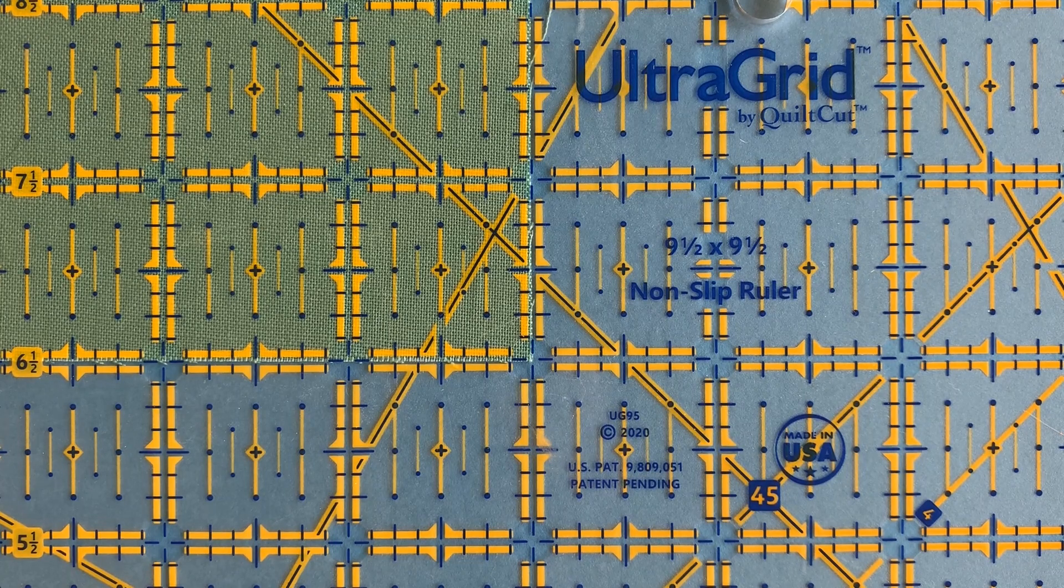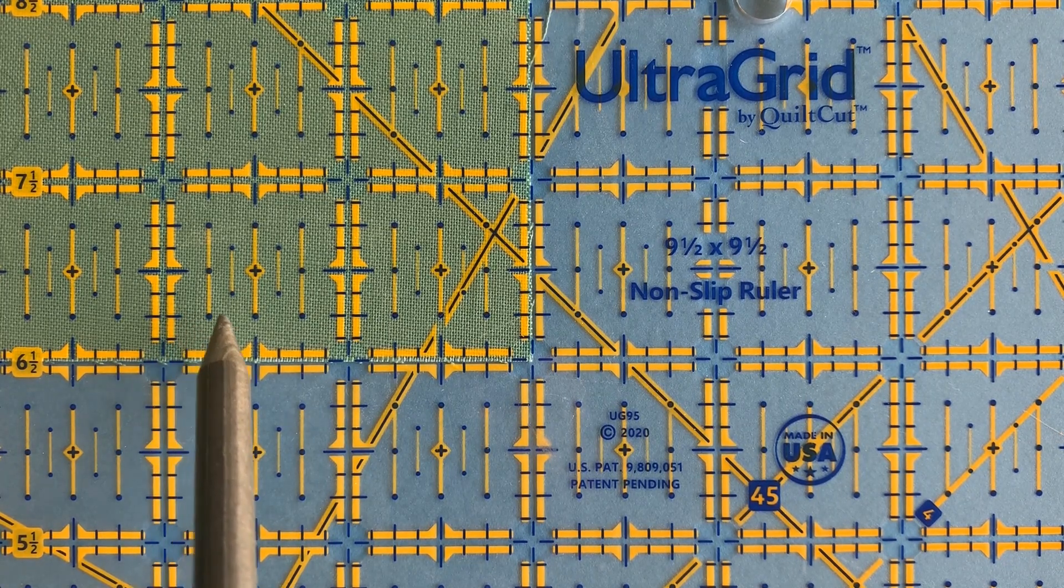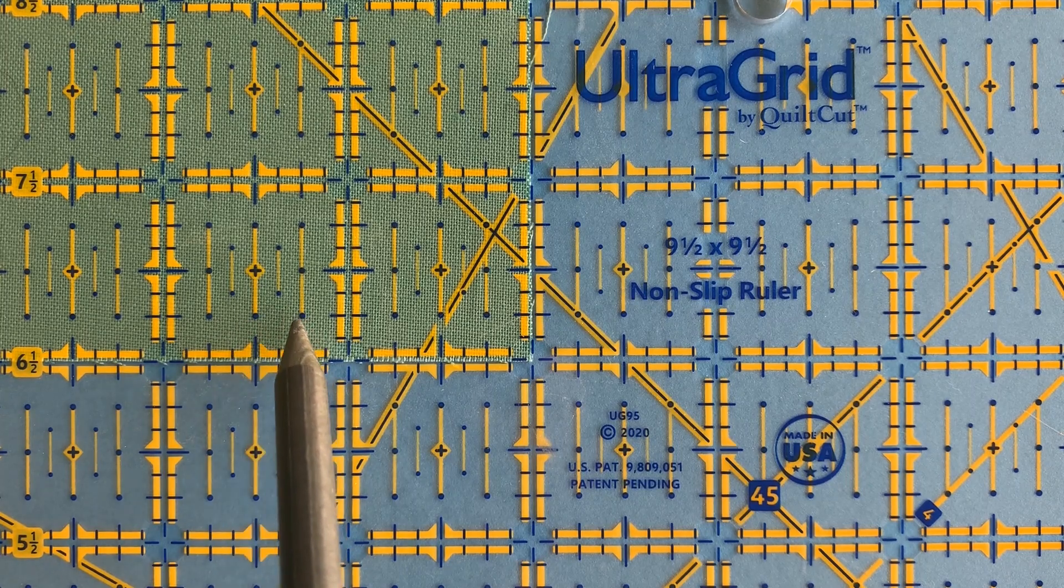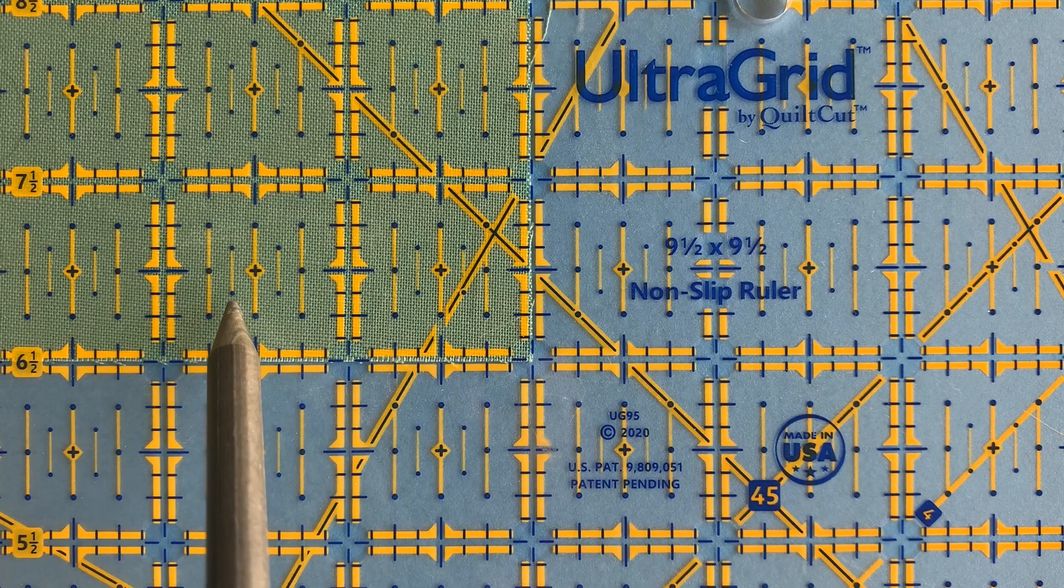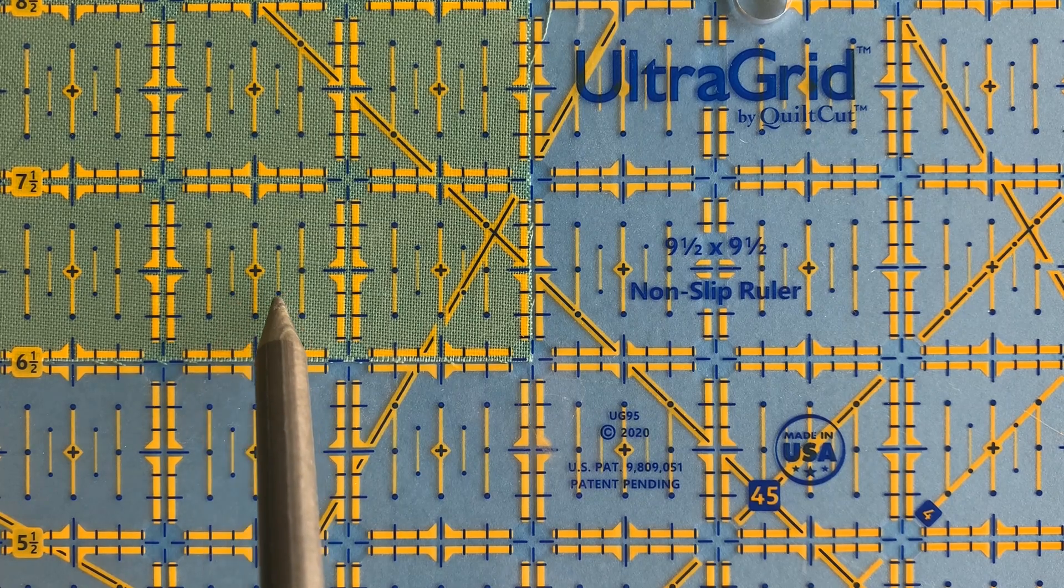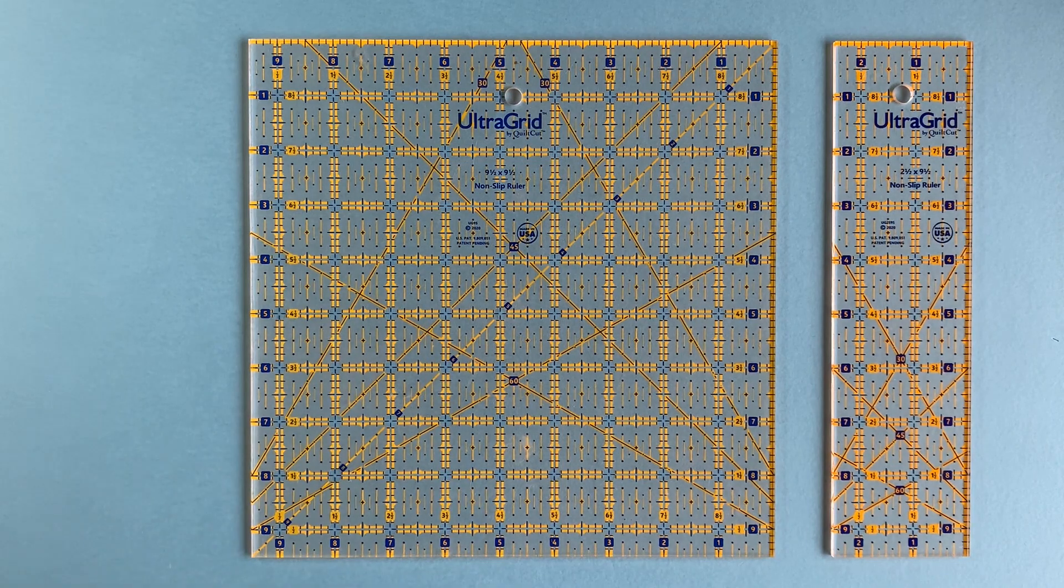UltraGrid rulers 1 inch grid patterns include primary markings for 1 quarter, 1 half and 3 quarter inch measurements. In addition, secondary markings are provided for 3 eighths and 5 eighths inch measurements to improve accuracy and ease of use.